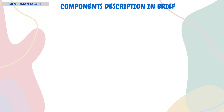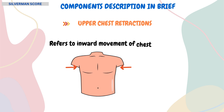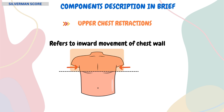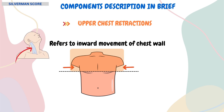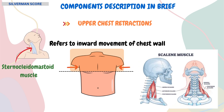First comes the upper chest retractions. It refers to the inward movement of the chest wall, specifically the upper chest area — that is the area above the nipple line — during inhalation. This happens when accessory muscles of respiration such as the sternocleidomastoid and scalene muscles contract to help expand the lungs.